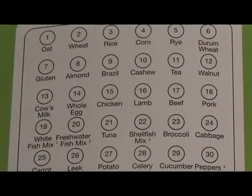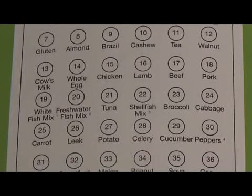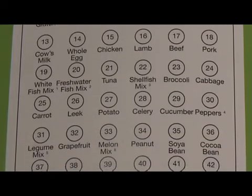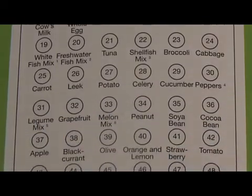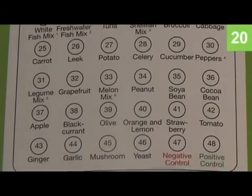Foods are located in positions 1 to 46 on the reaction tray. Identify which positions have produced a blue spot and refer to the test report in the kit instructions to identify the food responsible. Circle the foods that have produced a blue dot.